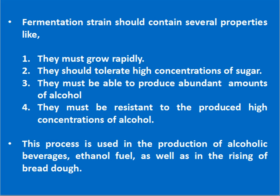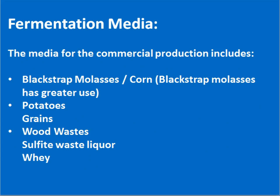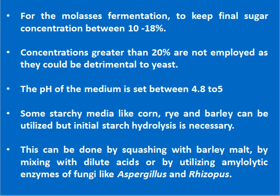This process is used in the production of alcoholic beverages, ethanol fuel, as well as in the rising of bread dough. The media for commercial production includes blackstrap molasses or corn, potatoes, grains, wood waste, sulphite waste liquor, whey, etc. For molasses fermentation, the final sugar concentration is kept between 10 to 18%, because concentrations greater than 20% are detrimental to yeast. The pH of the medium is set between 4.8 to 5.